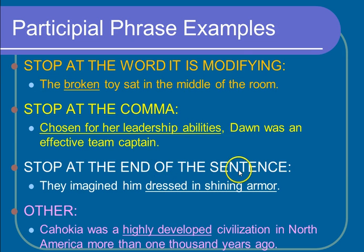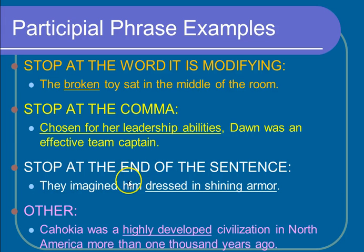Now look at stopping at the end of the sentence. 'They imagined him dressed in shining armor.' Which him did they imagine? The one that was dressed in shining armor. There's no comma for me to stop at, and the word 'dressed' is describing 'him.' Since 'him' comes before it, it wouldn't make sense to stop at that word. So, 'dressed in shining armor' is my participial phrase.